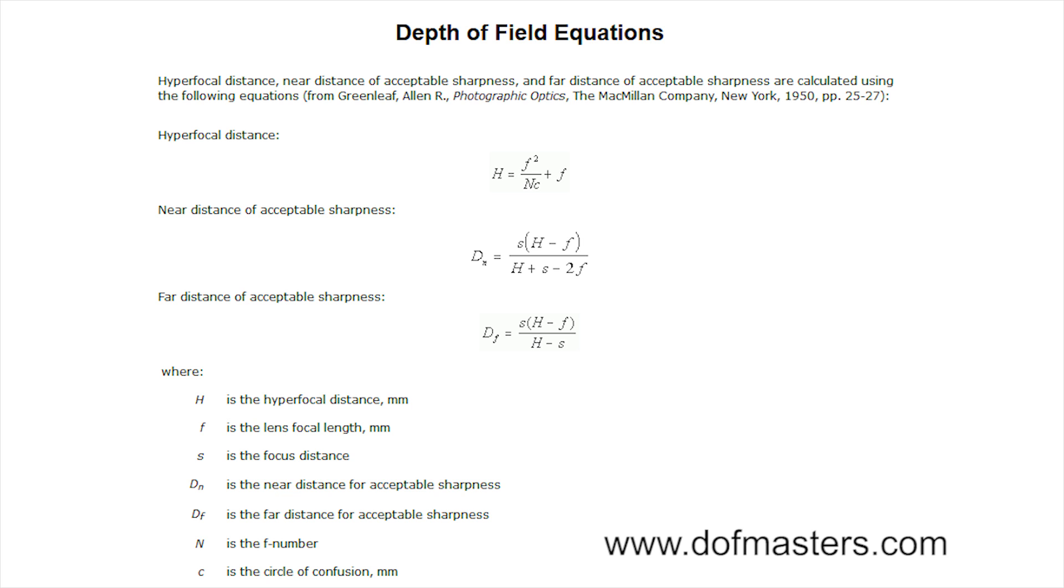To be able to calculate your near distance of acceptable sharpness, your equation would be DN equals S times H minus F over H plus S minus 2F. And to be able to calculate your far distance of acceptable sharpness, your equation would be DF equals S times H minus F over H minus S. S is the focus distance, or the distance that you are focusing your subject to.